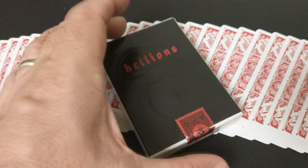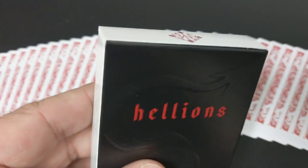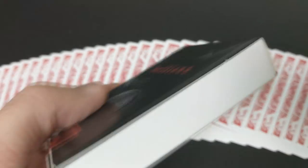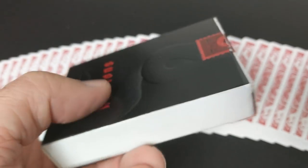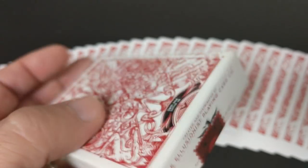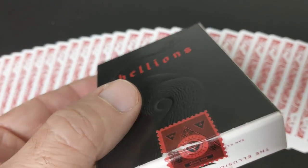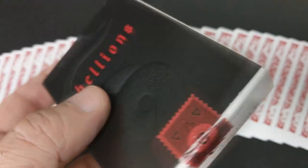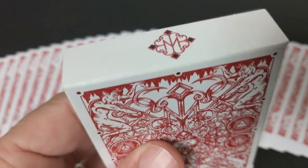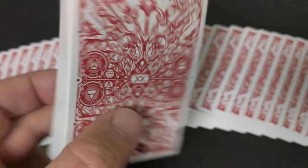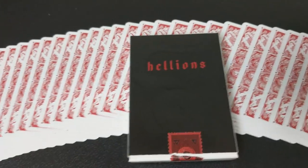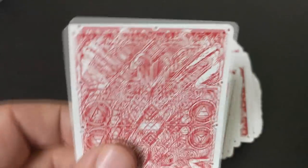Today we're going to look at the Black Hellions from Daniel Madison, Illusionist, and Oban Jones. This is a new release. I have no idea when it'll actually be released, which is kind of ironic because when I did the first red tuck case Black Hellion deck, I got those before they were public release as well. So again, I don't know when they're going to be released. I even asked Illusionist and they told me they didn't know either.